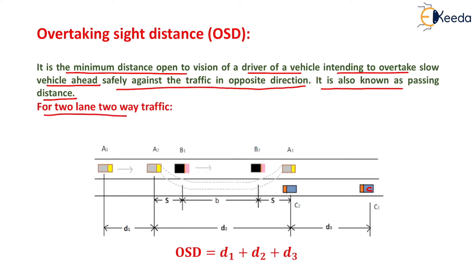For two-lane two-way traffic, a diagram is shown here. There is vehicle A, vehicle B, and vehicle C. Vehicle A is travelling with speed VA, vehicle B with speed VB, and vehicle C with speed VC. Due to the slow moving vehicle B, vehicle A will try to overtake it. At point A1, vehicle A reduces its speed to VB to follow vehicle B. From A1 to A2, vehicle A follows vehicle B at slower speed VB, and that distance is known as D1.